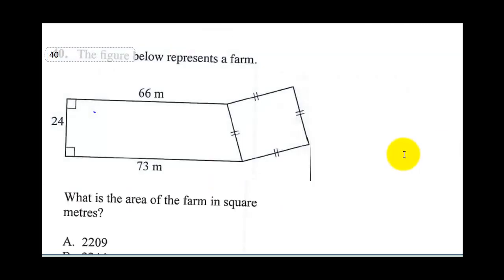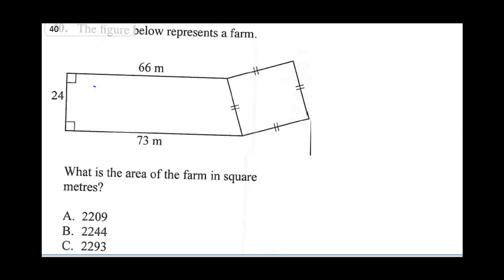Now, question 40 says the figure below represents a farm. What is the area of the farm in square meters? Now look at this question carefully. For you to get the area of this shape, you need to understand that this area is made up of two shapes. One is a trapezoid, this is a trapezoid. And this is a square. The reason is because the four sides are equal. Now all we need to do is to add up the area of the trapezoid plus area of the square.